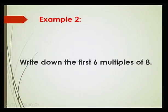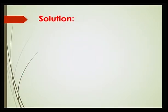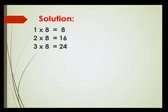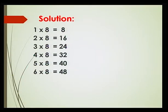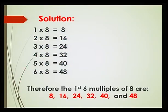We now move on to a second example: Write down the first 6 multiples of 8. To find the first 6 multiples of 8, I multiply 1 by 8 to get 8, 2 by 8 to get 16, 3 times 8 to get 24, and so on until 6 times 8 which is 48. So the first 6 multiples of 8 are 8, 16, 24, 32, 40 and 48.